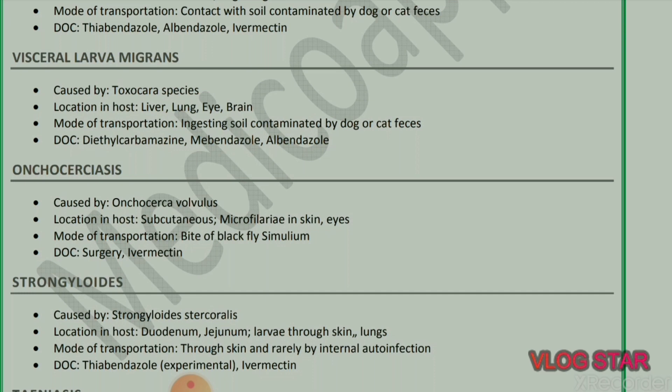Next parasite: Visceral larva migrans, caused by Toxocara species. Location in host: liver, lung, eye, and brain. Mode of transmission: ingesting soil contaminated by dog or cat feces. Drug of choice: diethylcarbamazine, mebendazole, and albendazole.